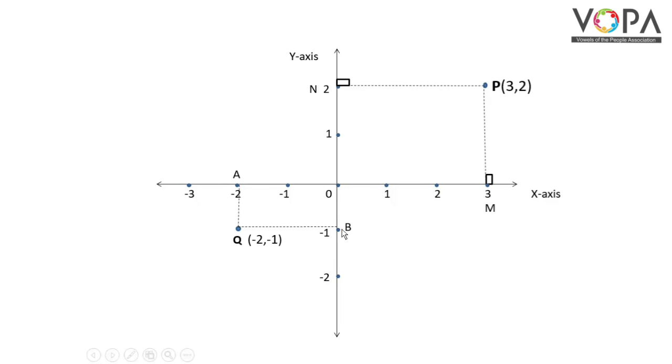The point B on Y-axis shows the coordinate minus 1. Therefore, Y coordinate of point Q is minus 1. Thus, coordinates of point Q are (minus 2, minus 1).